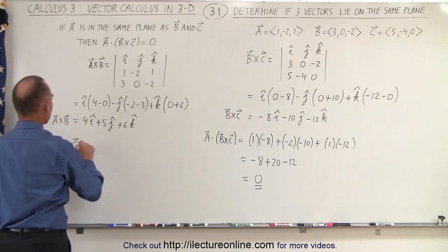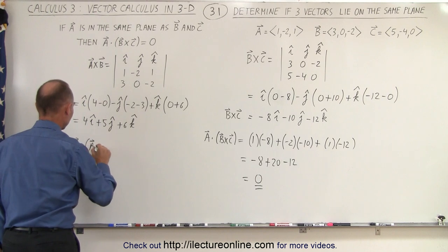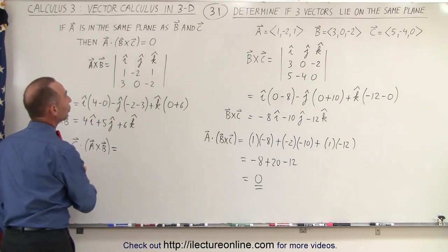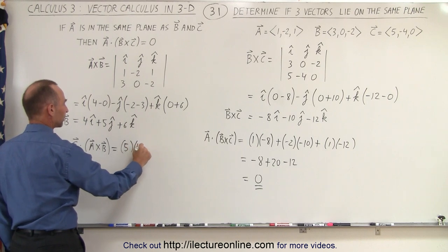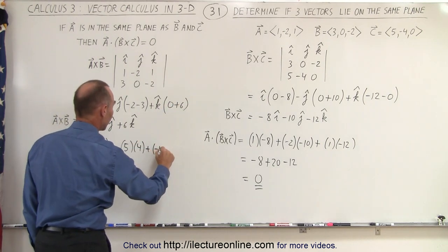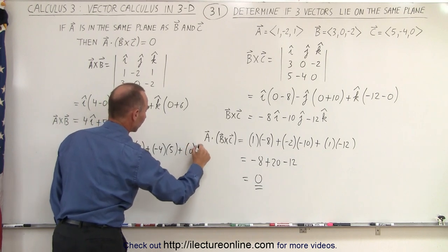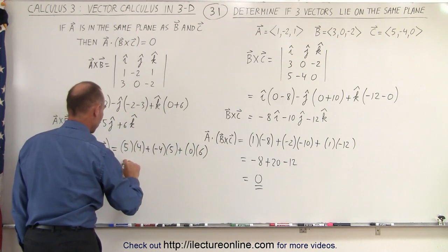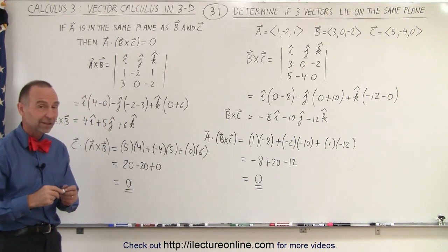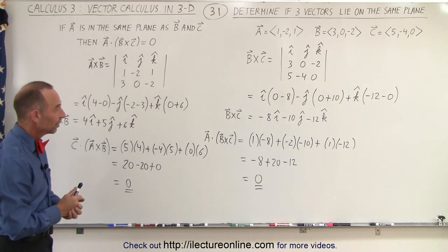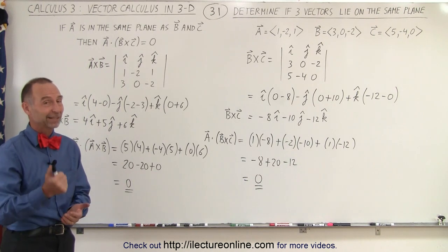And now we're going to do the dot product of C with A cross B, and again it doesn't matter if it's C dot A cross B or A cross B dot C, you get the very same result. So this is going to be equal to the first component of C which is 5 times the first component of our cross product which is 4, plus the second component of C which is minus 4 times the second component here which is 5, plus the third component 0 times the third component here which is 6. And notice that this is going to be plus 20 minus 20 plus 0 which is equal to 0. And you can see it really doesn't matter which order you put the vectors in, you will always get the same result if of course you don't make a small mistake somewhere, which is easily done with this kind of thing, so be careful and that's how it's done.